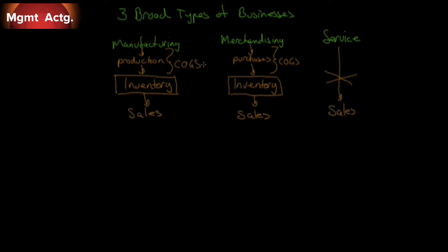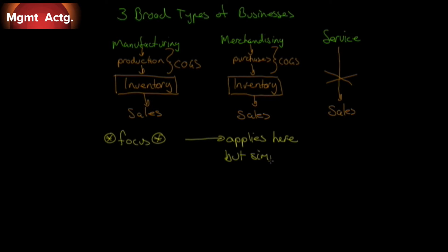This really sets up the conversation for Chapter 2. We're going to focus primarily on manufacturing companies — the three different levels of inventory, the classification of manufacturing and non-manufacturing costs. Once we understand how manufacturing companies track costs, it's easy to apply it to a merchandising company, simply because it simplifies down to just inventory. We don't have to worry about production costs; we know exactly what the cost of goods sold are.